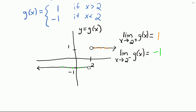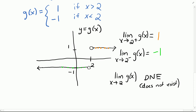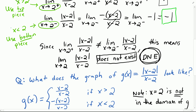Finally, using this graph for the two-sided limit as x approaches 2 of g of x: as we approach 2 from both sides, the y values get close to 2 different numbers — 1 from the right and negative 1 from the left. That means this limit does not exist. This confirms what we got algebraically: the limit does not exist, or DNE.